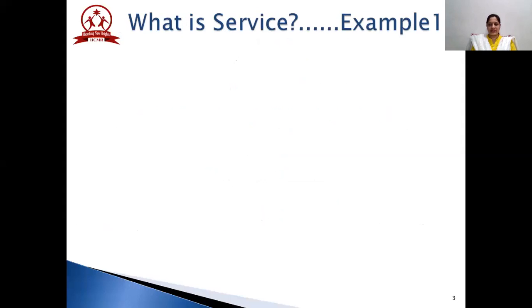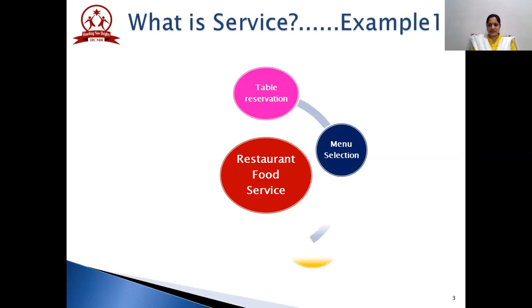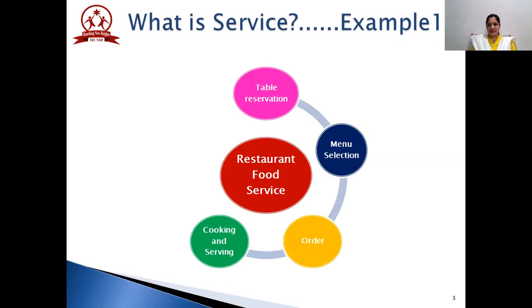Let's take an example of an offline service — the restaurant food service. When you visit any restaurant, the first service you come across is the table reservation service. After that, menu selection service, then order processing, then cooking and serving that particular order, and finally the billing. So a restaurant food service is composed of many sub-services such as table reservation, menu selection, order, cooking and serving, and billing.